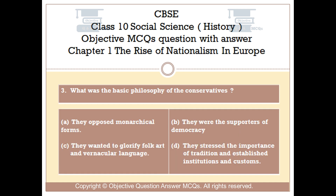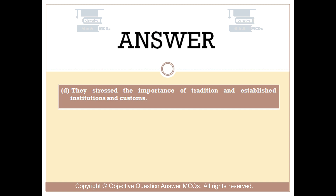Question number 3. What was the basic philosophy of the conservatives? Option A: they opposed monarchical forms. Option B: they were supporters of democracy. Option C: they wanted to glorify folk art and vernacular language. Option D: they stressed the importance of tradition, established institutions, and customs. The right answer is Option D — they stressed the importance of tradition, established institutions, and customs.